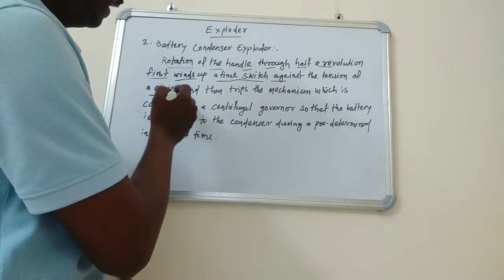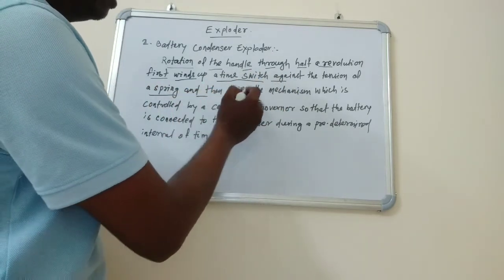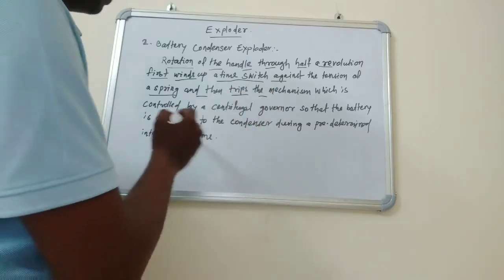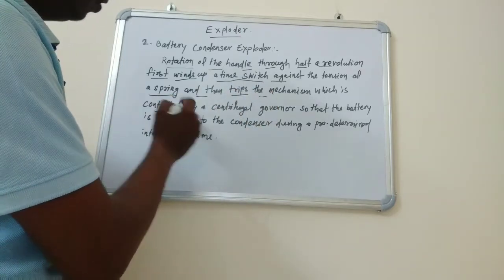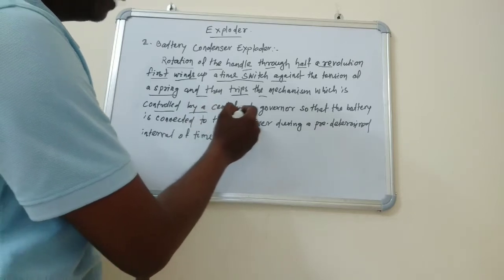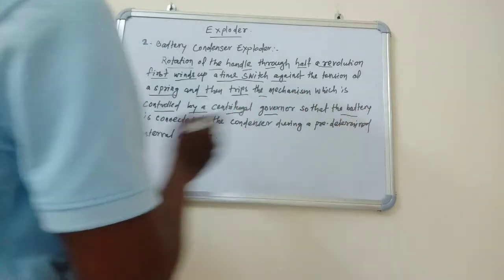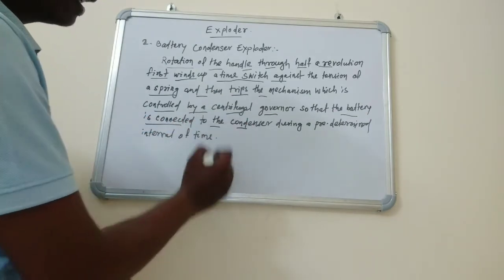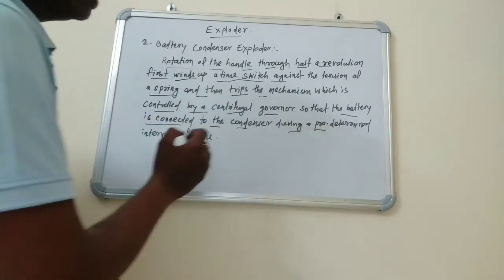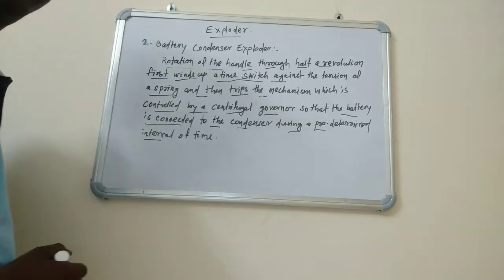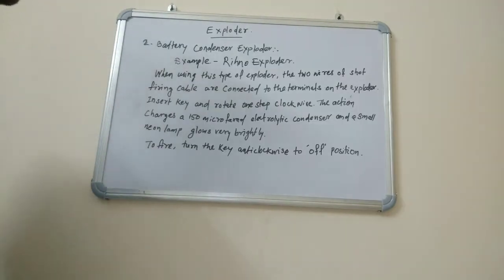The battery is connected during a predetermined interval of time. Now let's start with an example of battery condenser exploders: Rhino exploders.